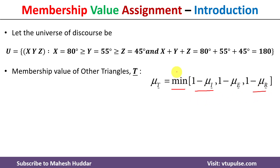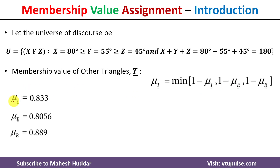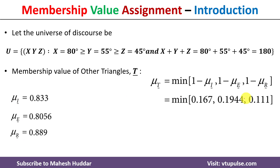Among these three we select the minimum, which gives the membership value of other triangles. We have already calculated all three values. The first term is 1 minus 0.833, which equals 0.167.